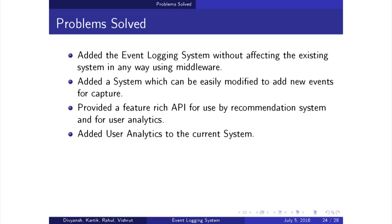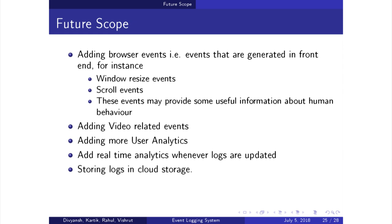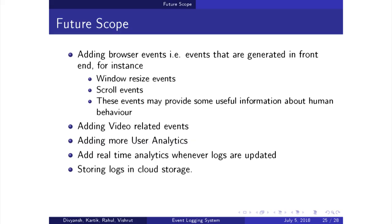Since our project uses Django middleware, we don't have to change anything in the existing code. Adding new events is very easy. The API provides data which can be used by other systems, and basic analytics are shown to users. For future scope: since we are using middleware, browser events such as window resize or scroll events aren't captured, but they provide important behavioral results and can be added. Video events such as the time at which a user skipped, the portion skipped, and the playback speed can also be logged. More in-depth analysis and cloud-based log storage can also be added.